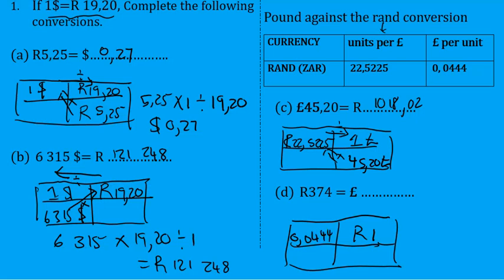And if we want to convert the rands, remember rands must go under rands. So we've got 374 rands, and then we're going to multiply across and divide sideways. I'm going to do that off screen.